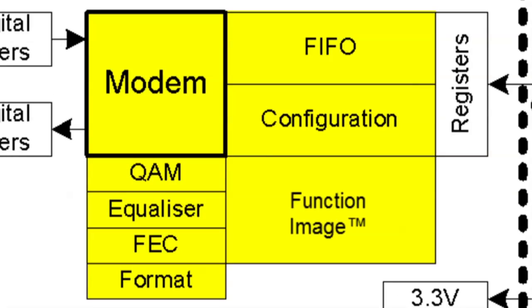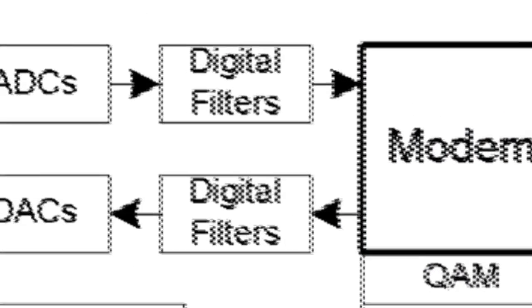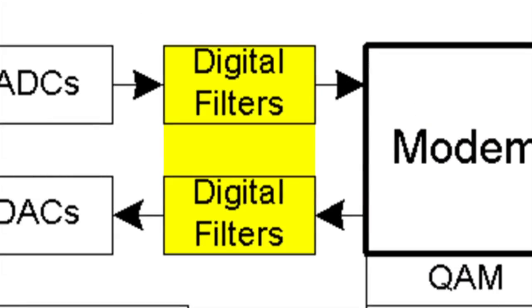In addition to supporting 4QAM, 16QAM, and 64QAM, the CMX7163 also provides a wide variety of data rates and FEC types. The bandwidth and filter response of the integrated digital filters automatically changes with QAM type and data rate. These filters provide significant adjacent channel rejection.